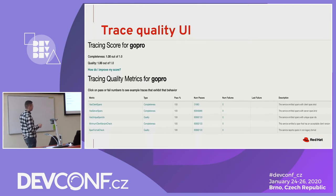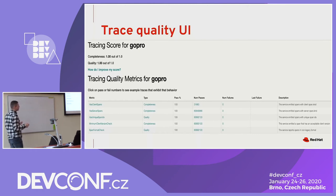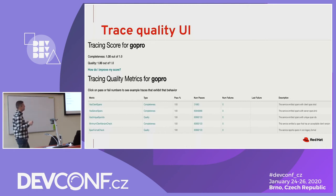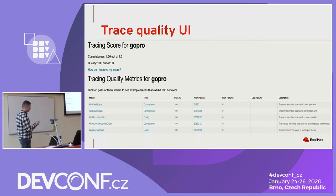What they measure includes: does this trace have all the metadata, like client and service spans? Is the Jaeger client version reporting in the appropriate format? Are they using the right Jaeger client version? This is an example KPI where everything looks fine.